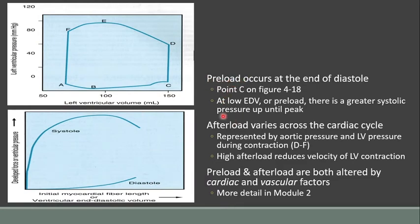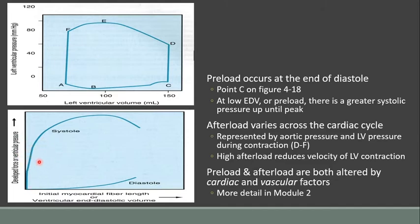As discussed in previous videos, preload and afterload can impact our stroke volume. Preload is going to impact the length of our sarcomeres and therefore the pressure. At point C, if we get an increase in venous return, we're going to get a higher end diastolic volume and therefore a higher preload of that left ventricle. We're going to get higher forces that can be developed by the sarcomeres when they are active. At low end diastolic volumes, there's a greater relative increase in systole based on the steepness of this curve — a small increase in end diastolic volume produces a much larger increase in systolic pressure near the top of the curve.